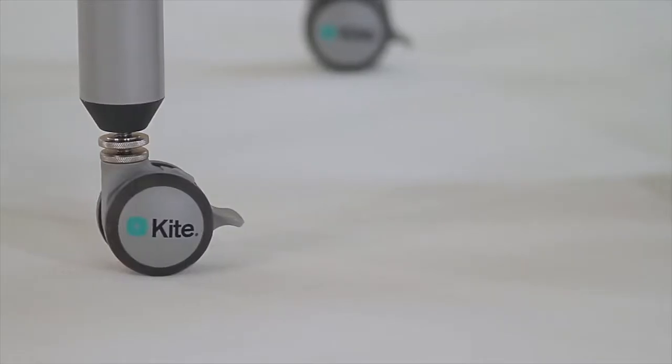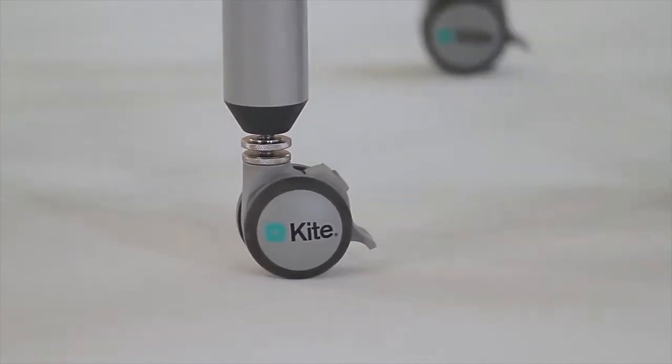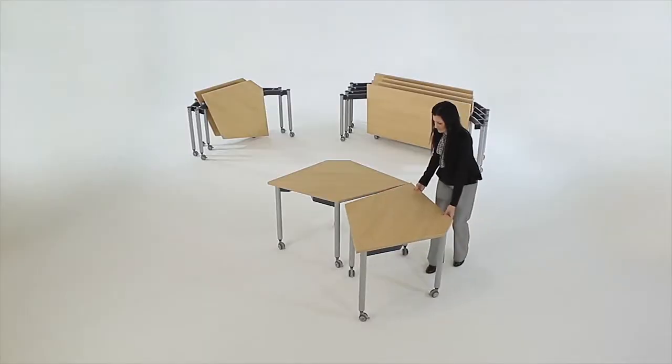The Kite dual locking caster ensures that the table is as stable as fixed frame furniture, preventing any need for a linking device between tables.